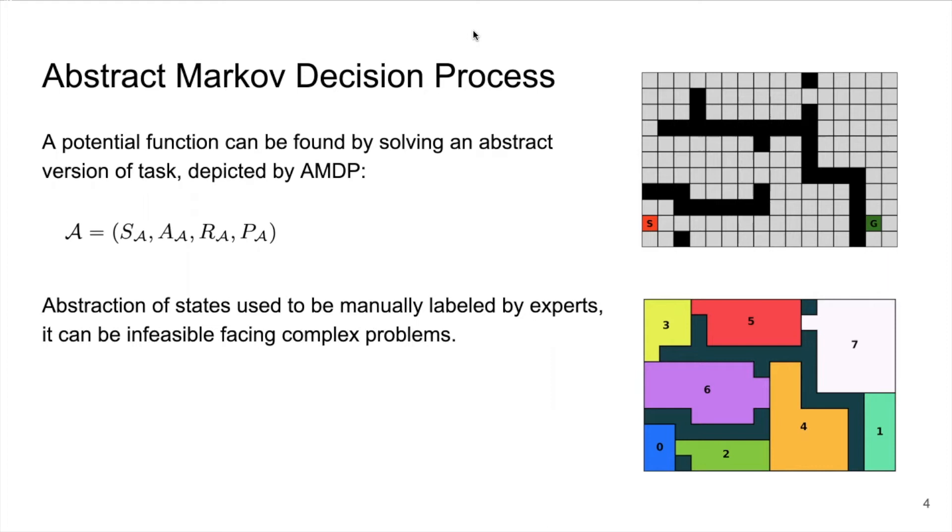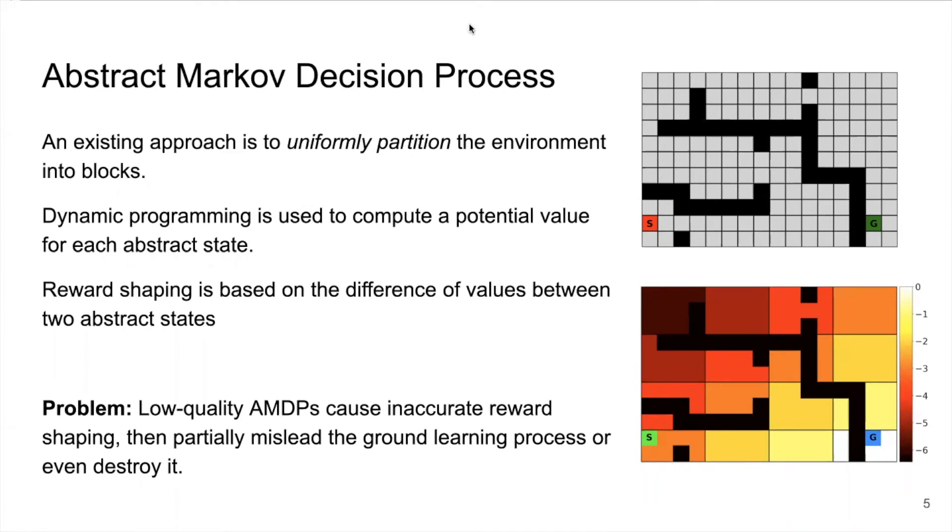However, this job can be expensive and infeasible when facing complex problems, so it is meaningful to automate the construction of the abstraction. There is an existing simple way to build AMDP which uniformly partitions the whole environment into blocks or abstract states. We refer to this simple approach as uniform approach. The rest of elements in the AMDP are determined based on the adjacency relationship among all abstract states and position of the goal state.